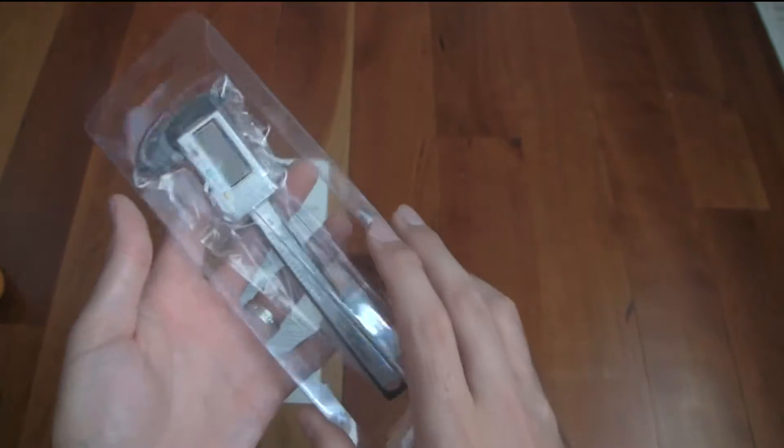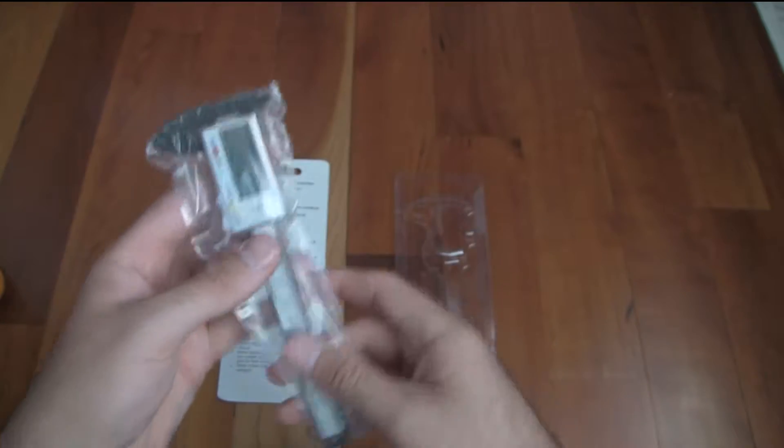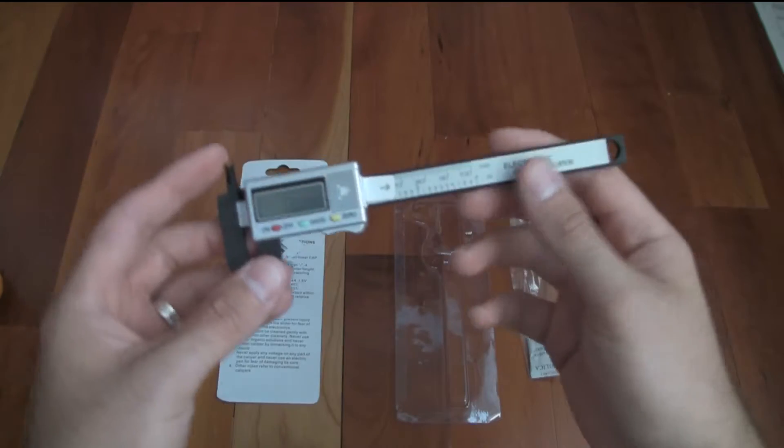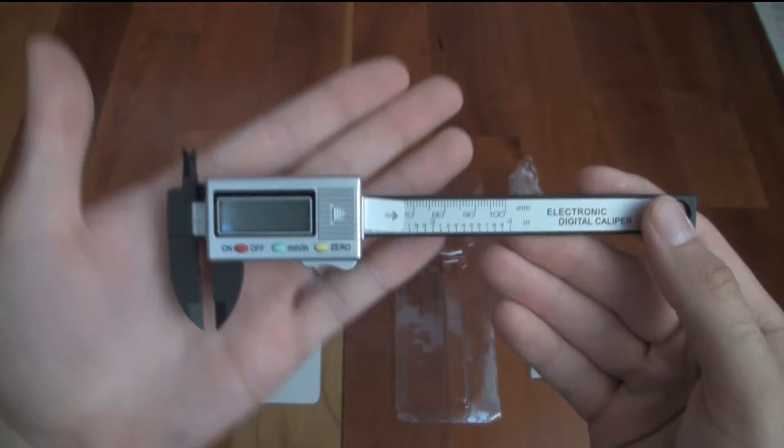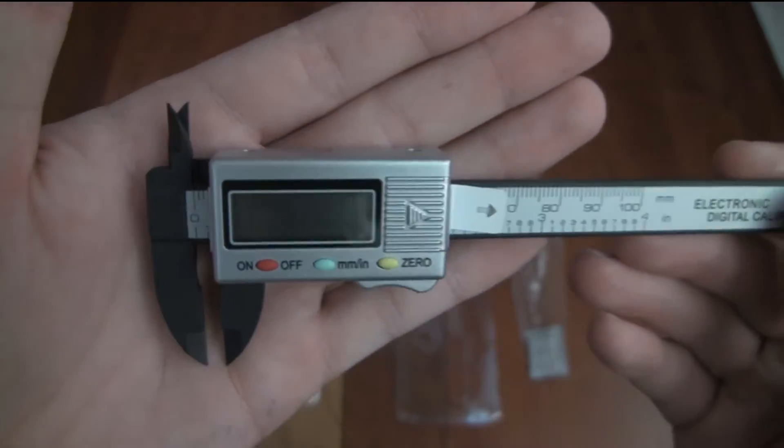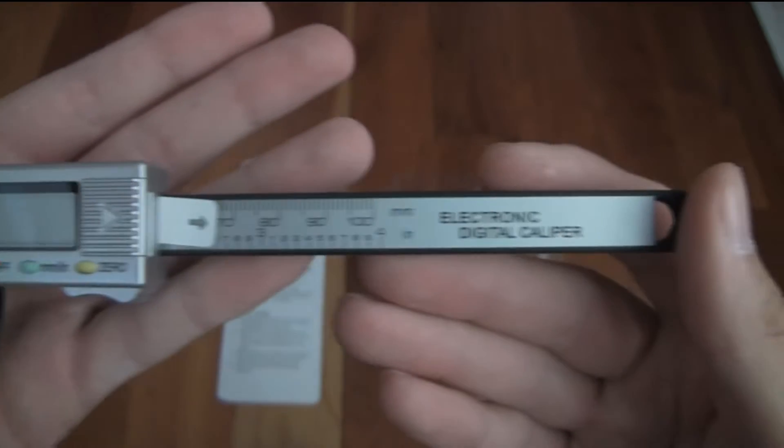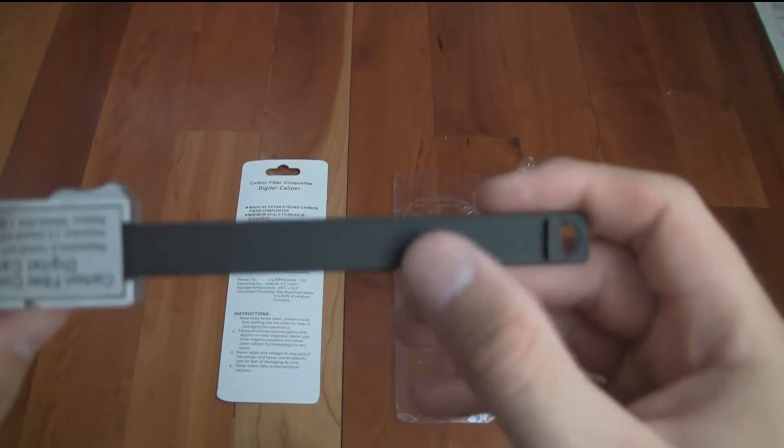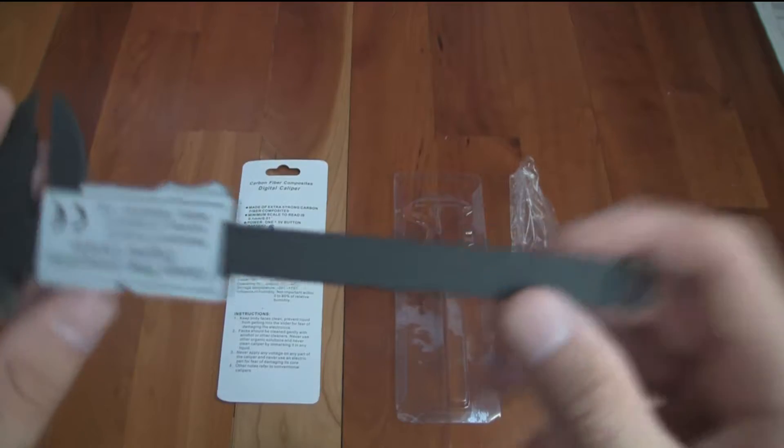As you can see the caliper is wrapped in a little plastic. Here is the caliper. And as you can see there's the information. And apparently it's carbon fiber or something like that. I don't see it but whatever.